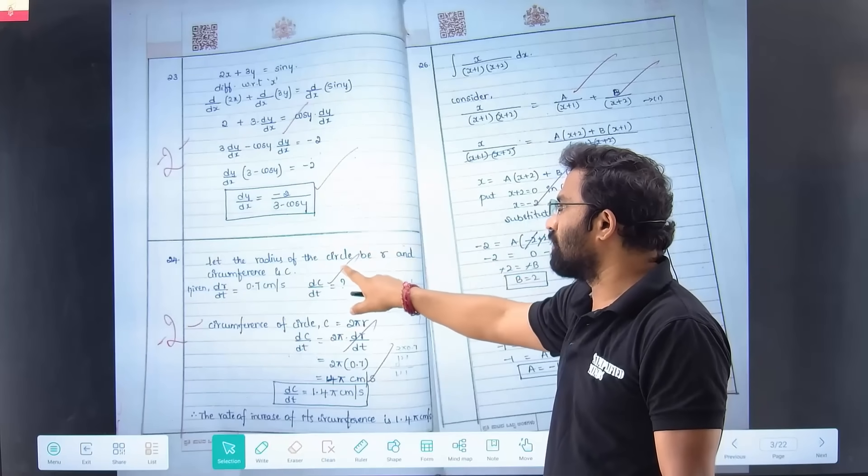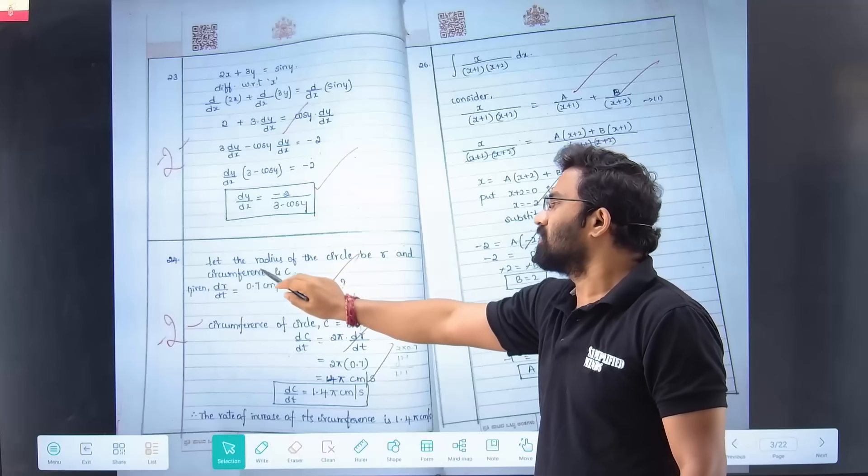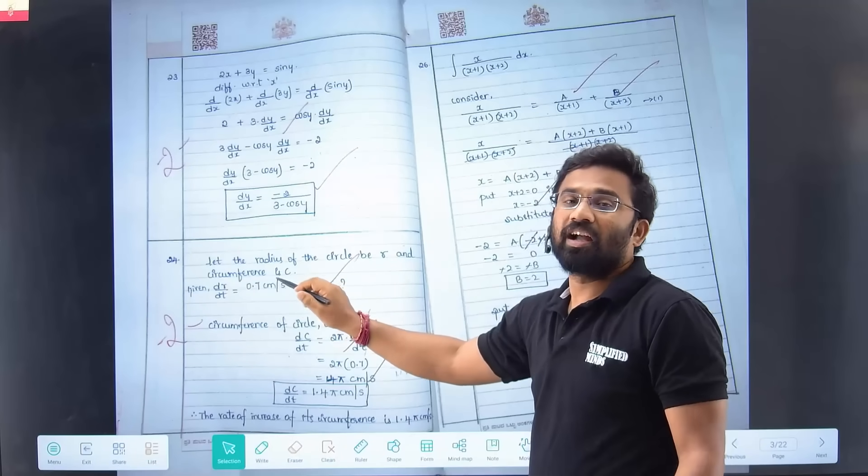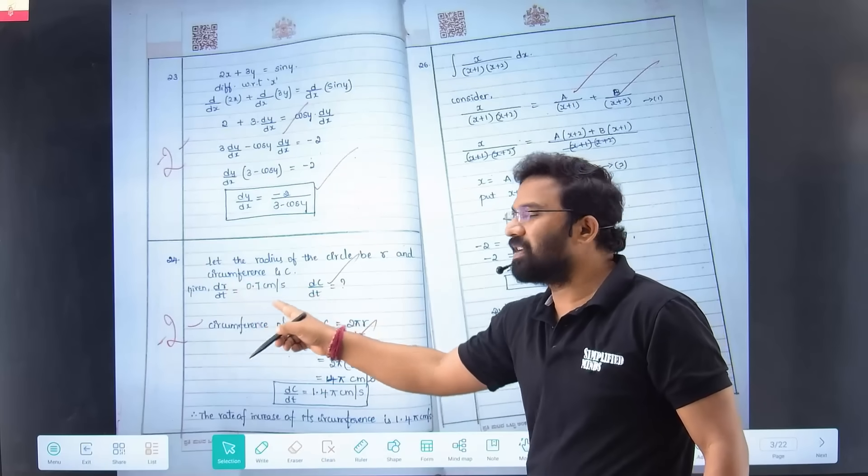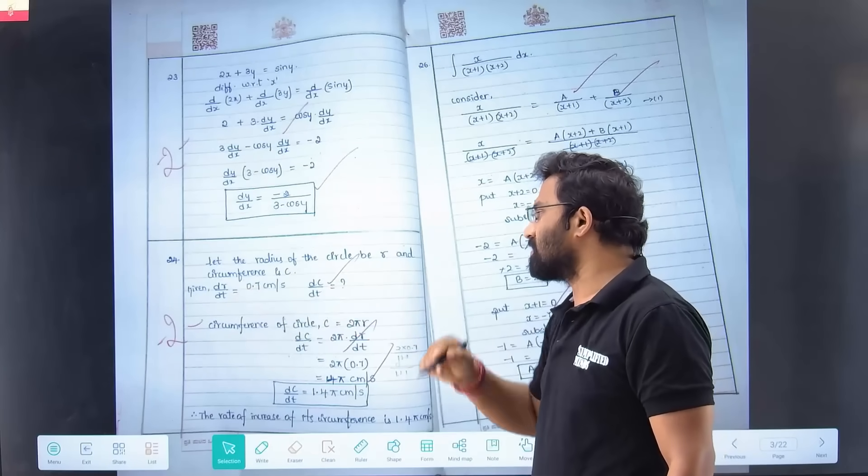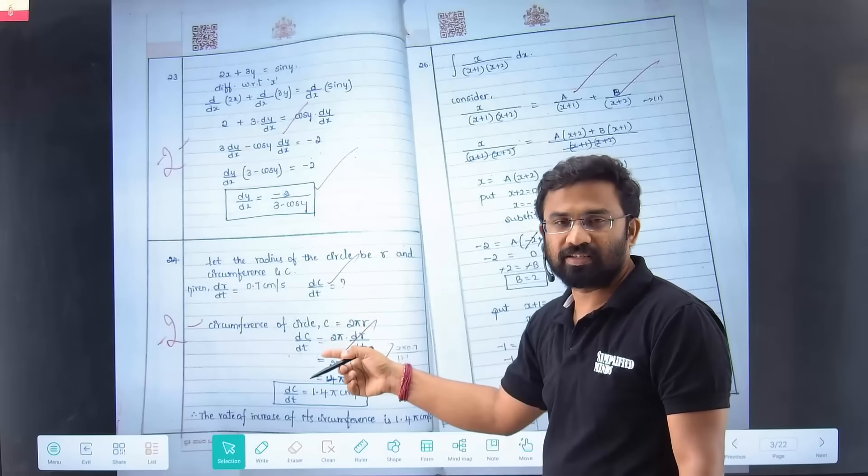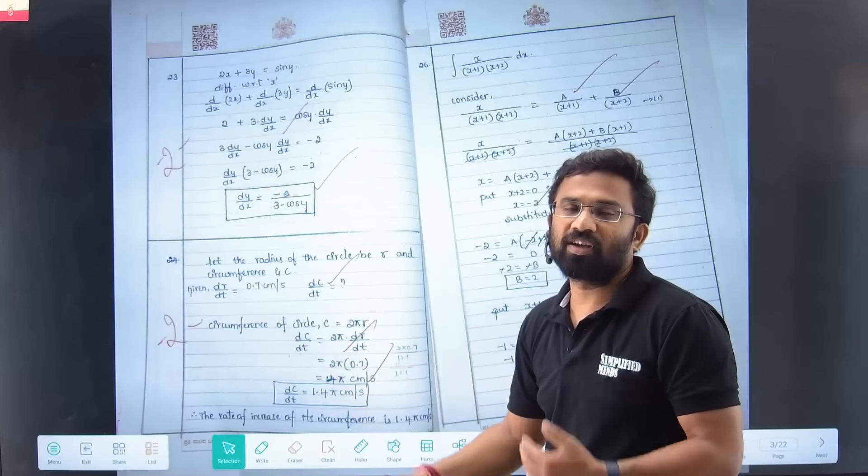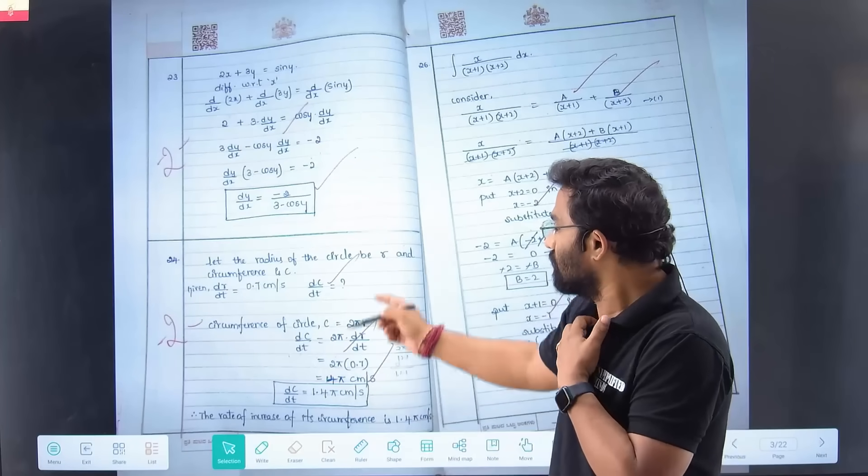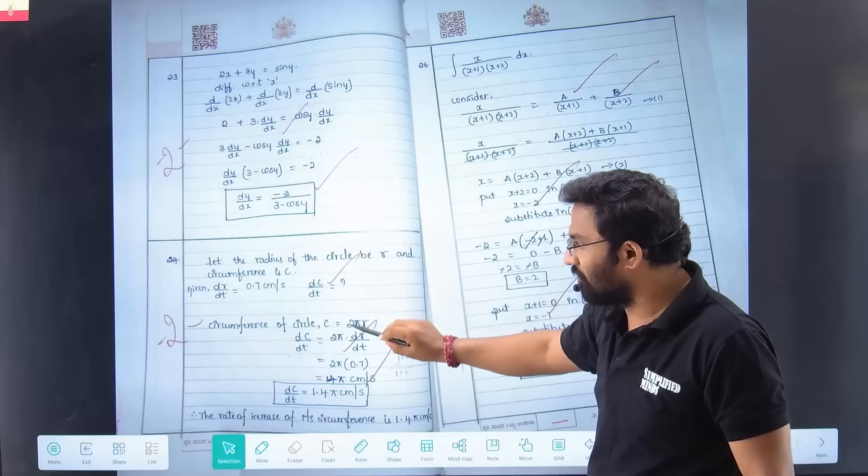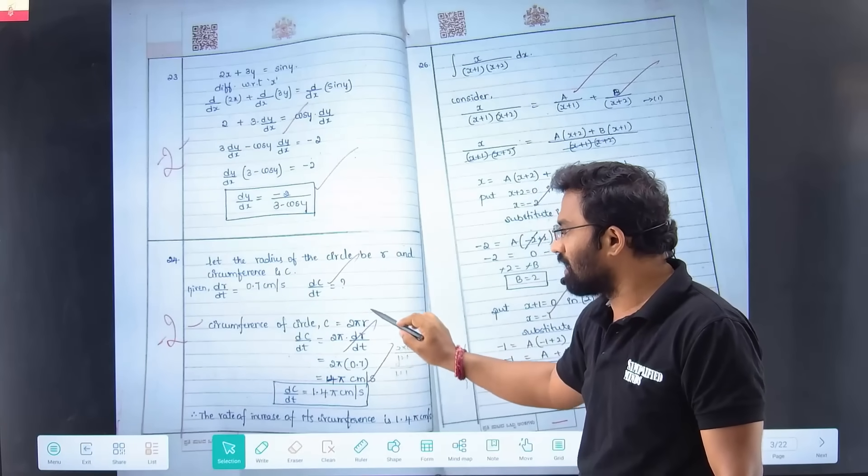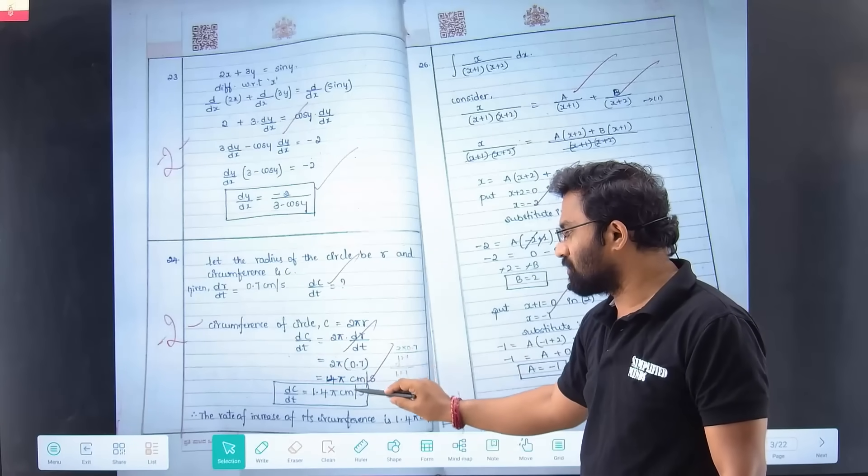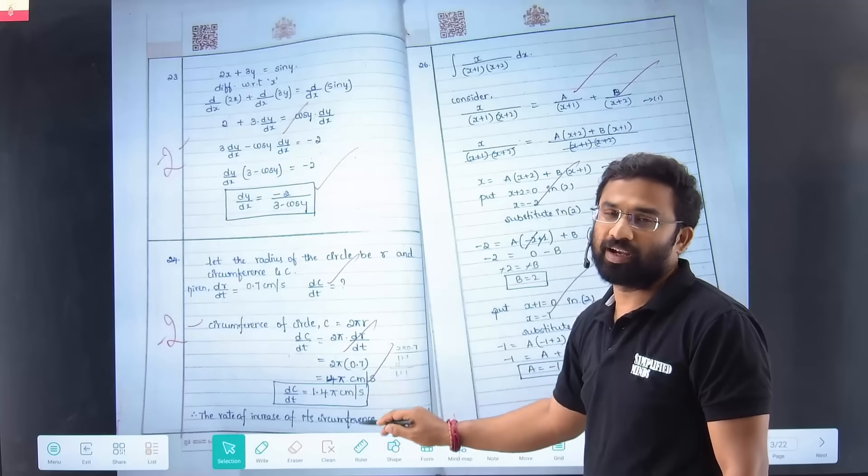And again, this is a determinant question to get the relation between x and y. This is a very famous question. Next question, you can see how neatly the student has presented. Presentation is very important, you have to present very neatly. Always write at least one sentence - let the radius of a circle be r, circumference is C, and then write a certain statement.